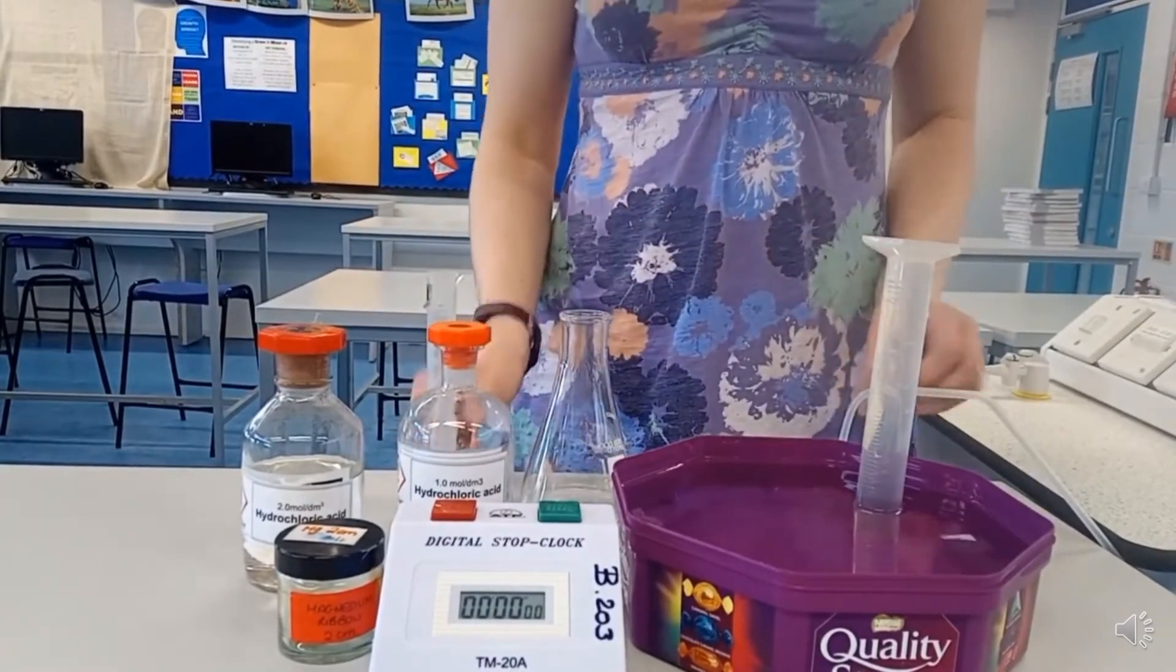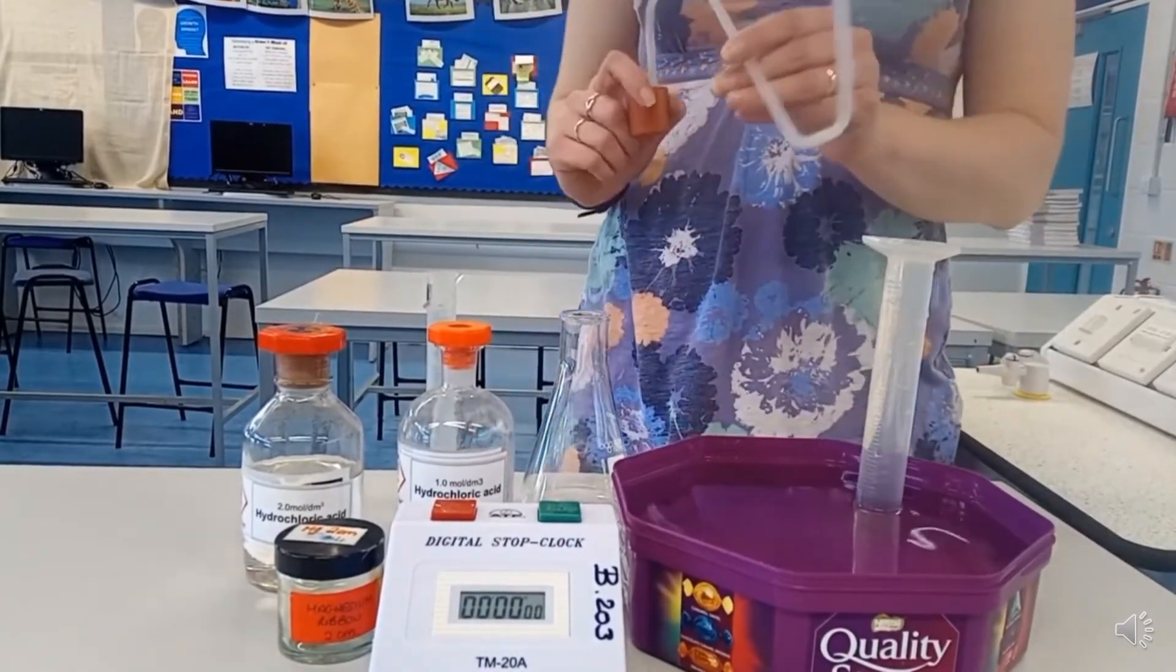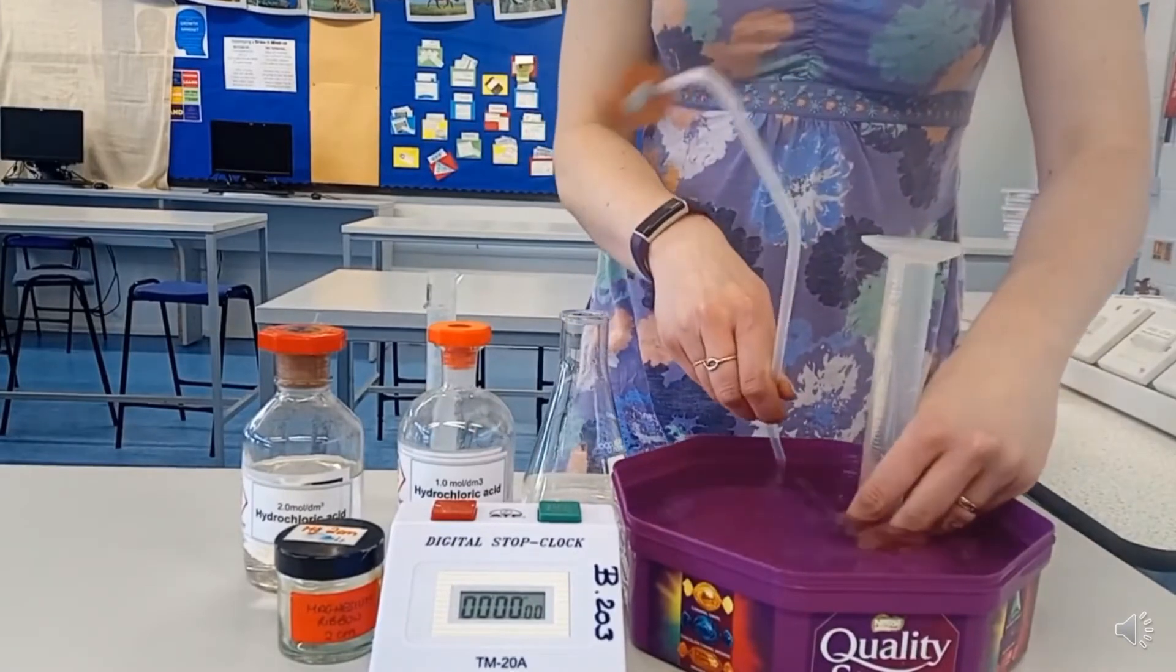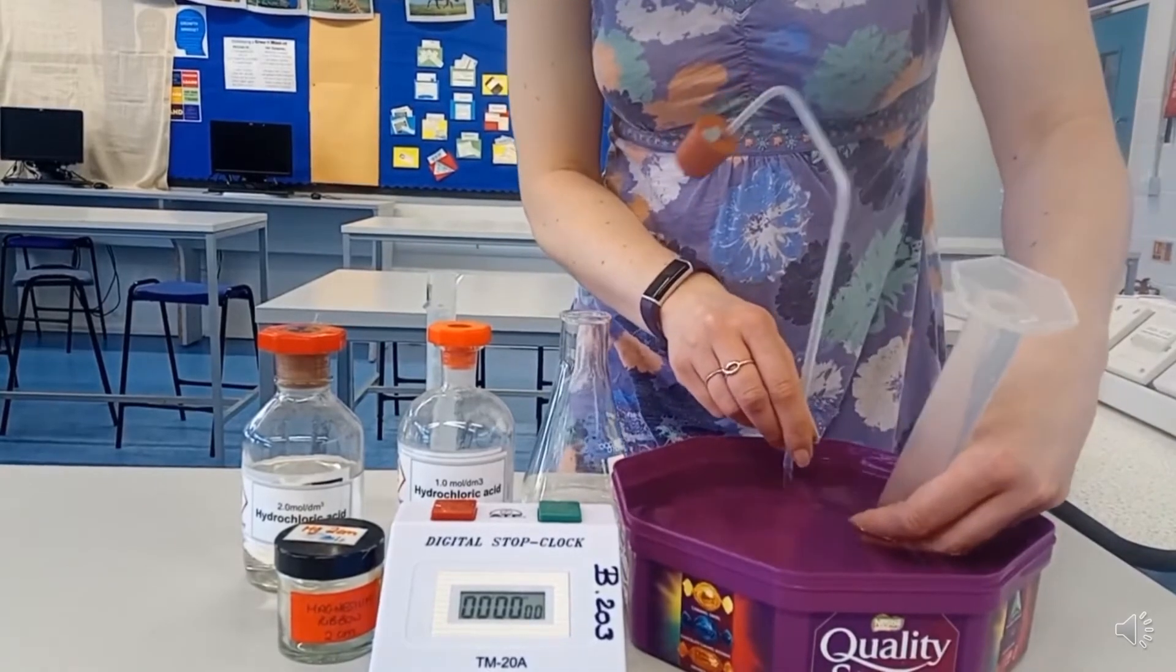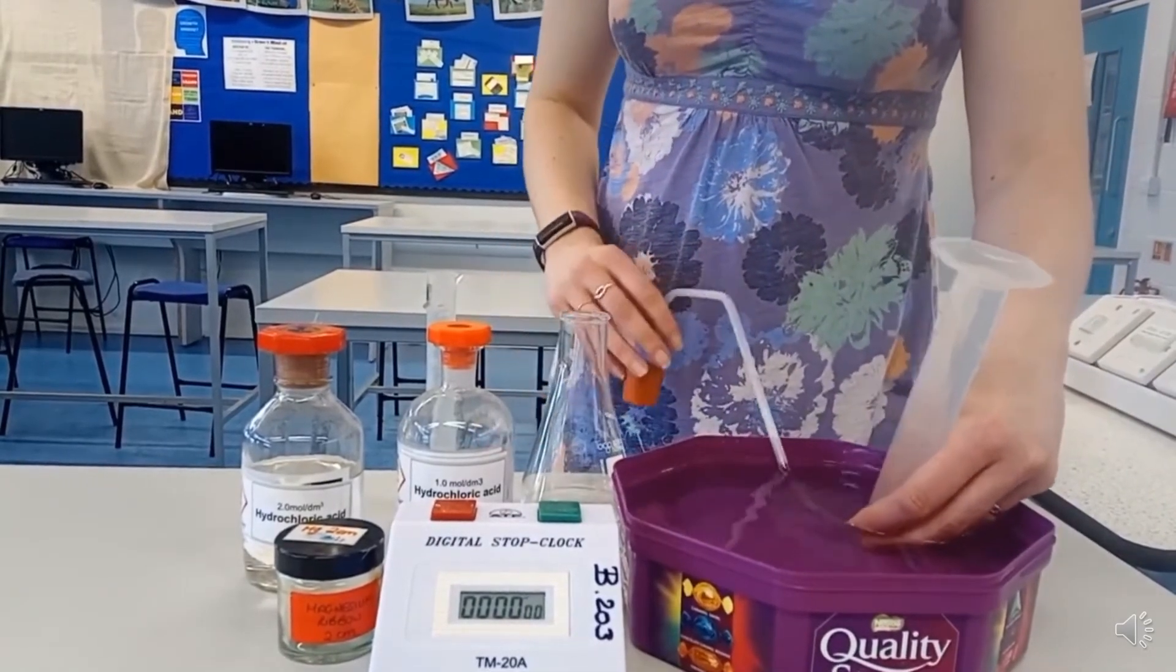I'm going to put this piece of magnesium into the acid, but first I need to sort out my delivery tube. This is going to go up and inside the measuring cylinder full of water. So as the gas is produced, I'll be able to collect it, it will displace the water, and I'll be able to read off the volume.